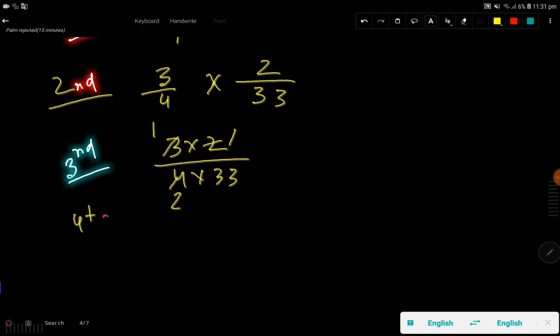If I divide this 3 by 3, then I'll get 1. If I divide this 33 by 3, then I'll get 11. So basically we are getting 1 times 1 and 2 times 11, so we are getting 1 over 22.